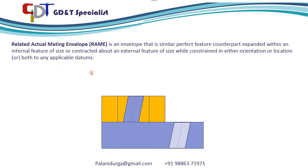Here we have an example of a part with a boss. This is an envelope — if you see this, the envelope contracts to the external feature in such a way that it touches the high points. This actual mating envelope, which is taking the reference of the datum surface — in this case, orientation with the datum surface — is called related actual mating envelope.